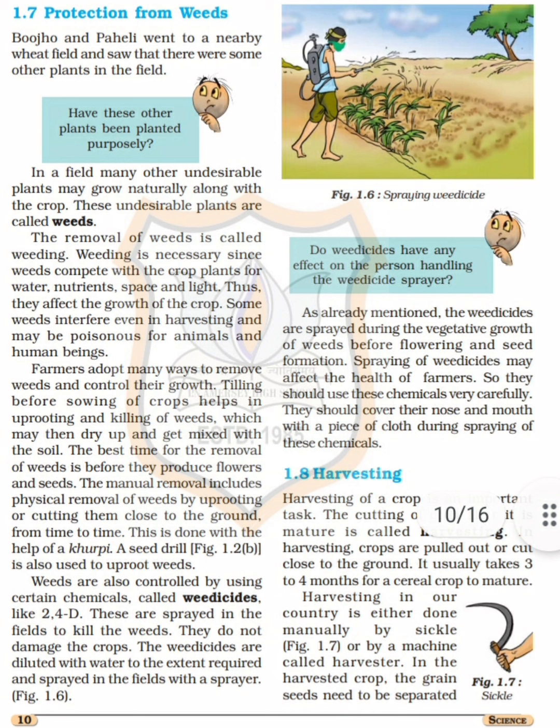We saw that there were some other plants in the field growing along with the wheat plants. In a field, many other undesirable plants may grow naturally along with the crop. These undesirable plants are called weeds.